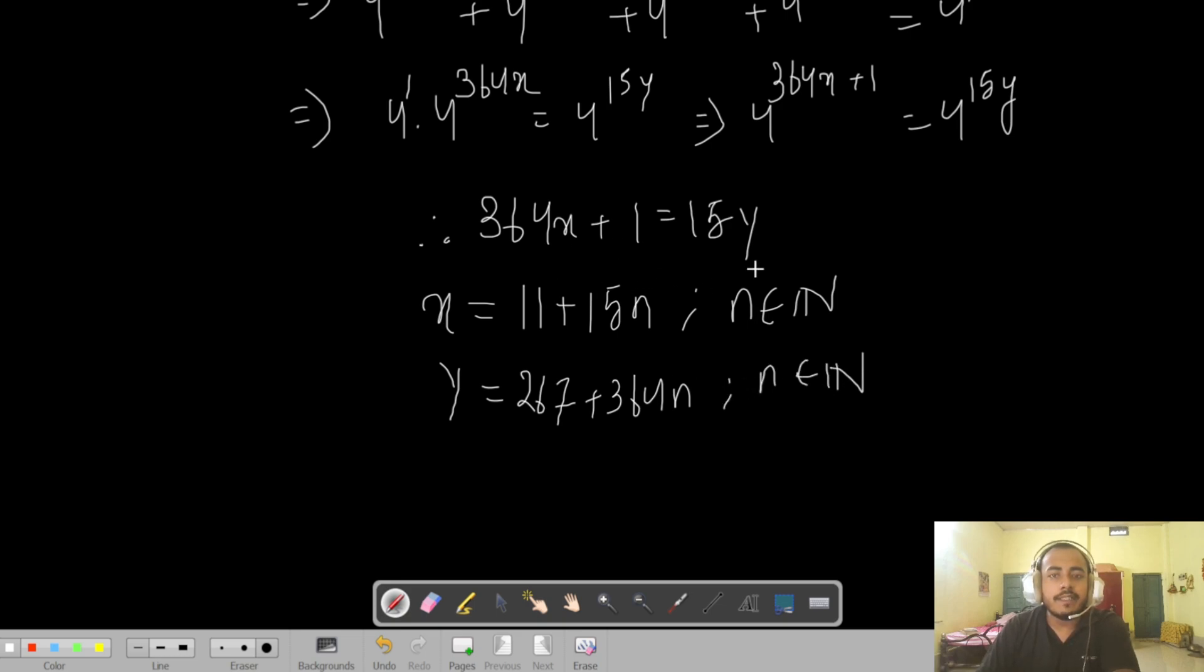This form works because the base solution of this equation always has a solution in integers. This is because of Bezout's theorem, which states that this is basically 15y minus 364x equals 1, and since 15 and 364 have a GCD or greatest common divisor of 1, this equation always has a positive integer solution.